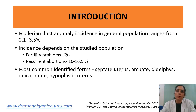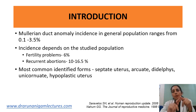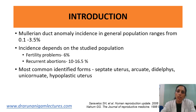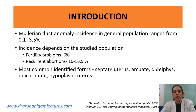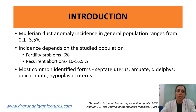To introduce the Mullerian Duct Anomalies: the incidence in the general population ranges from 0.1 to 3.5 percent, but the incidence depends upon the studied population. If you are seeing a population with fertility problems, the incidence increases to 6 percent. If you are seeing a cohort of recurrent abortion, this incidence can increase up to 10 to 16.5 percent. The most commonly identified anomalies are septate uterus, arcuate uterus, didelphys uterus, unicornuate uterus, and hypoplastic uterus.